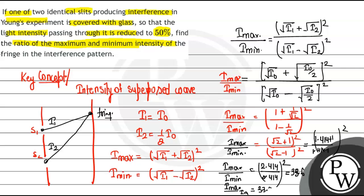So the ratio of maximum and minimum intensity is 33.6, and this is the answer for this question. I hope you understand it well. Best of luck, thank you.